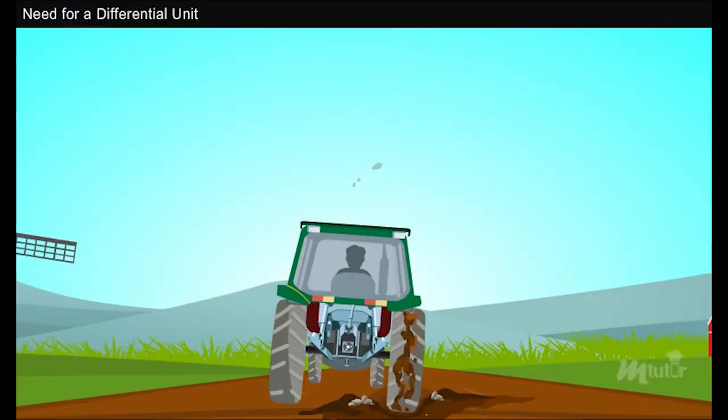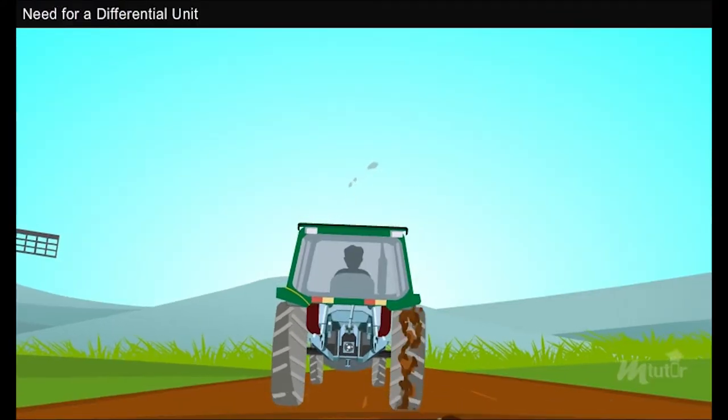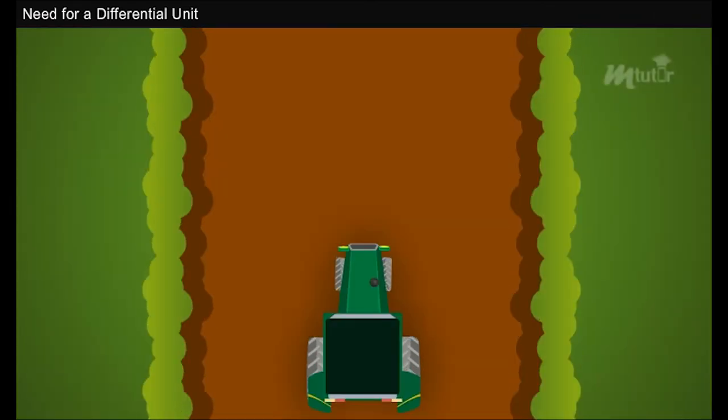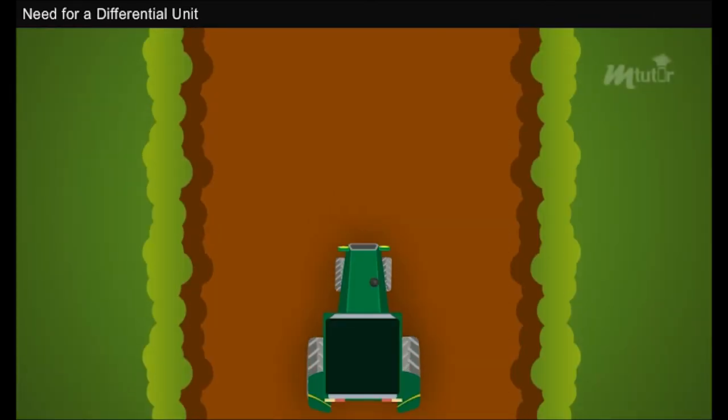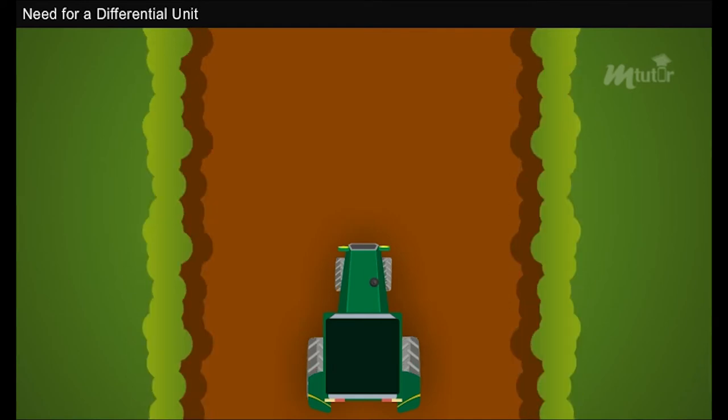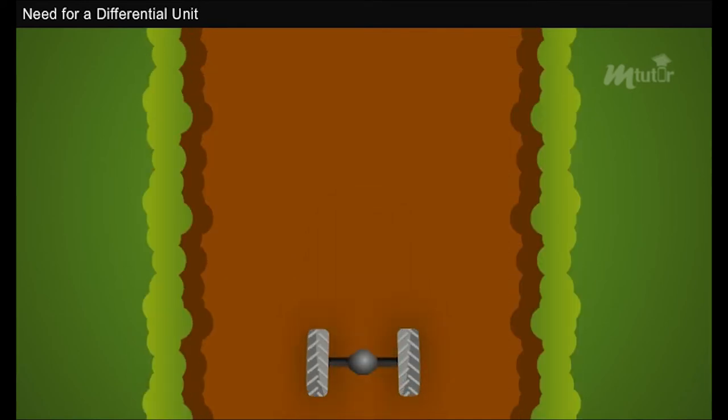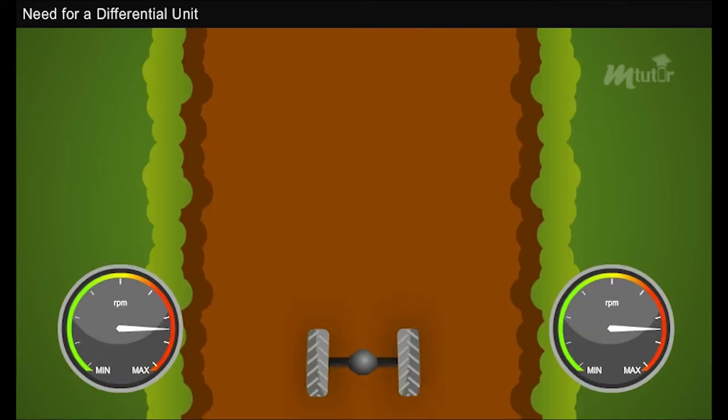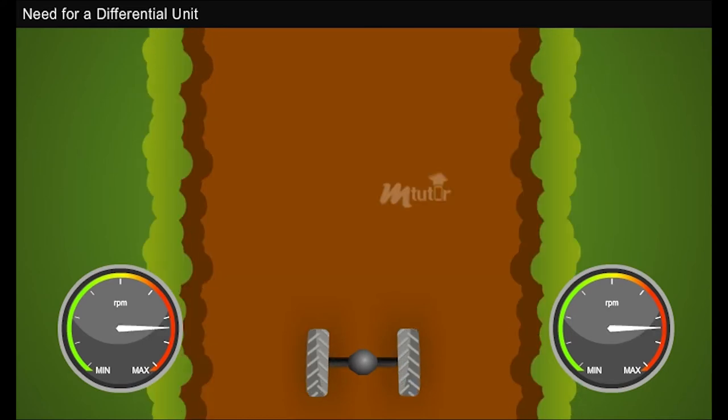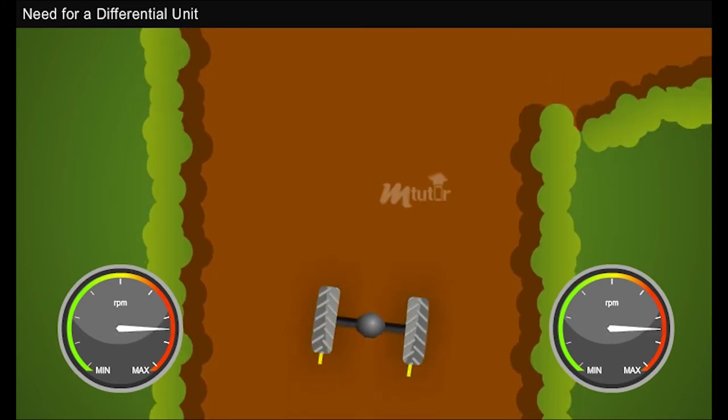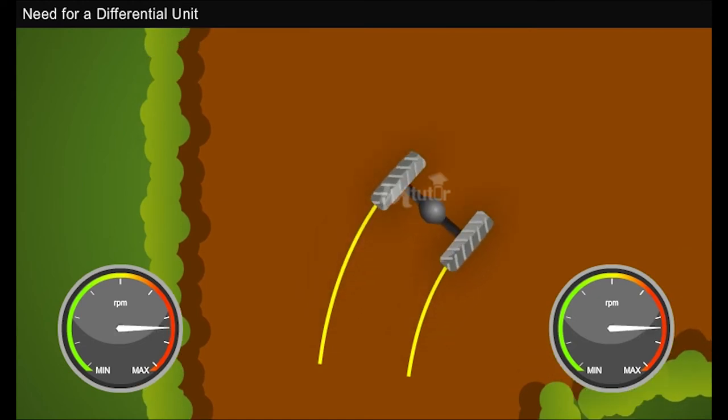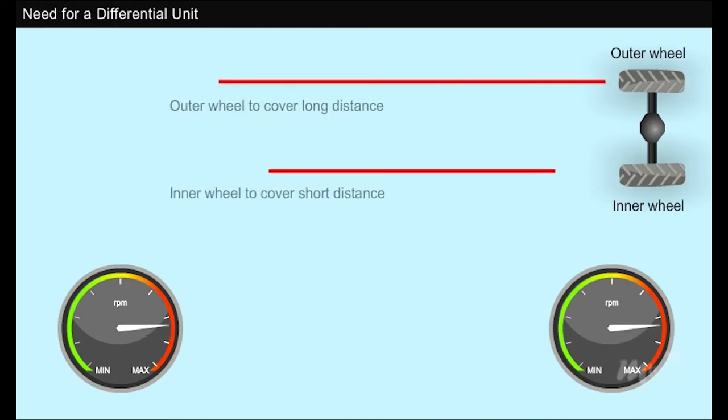This helped the vehicle overcome muddy and pothole obstructions. Therefore no problem occurred while driving on a straight road. However, when the vehicle took a turn, the inner wheel slipped and hindered the forward motion of the vehicle.